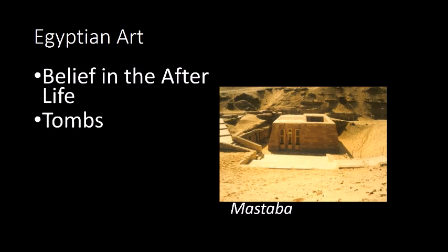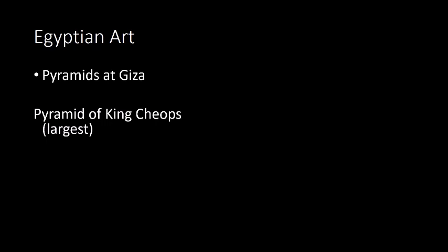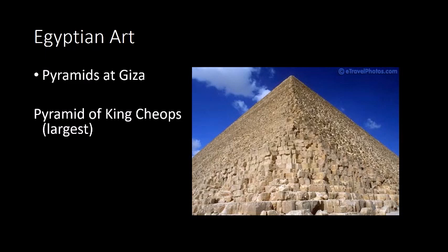The mastaba was very simple, just like a house — you have the post and lintel construction. However, there was one Pharaoh who wanted something grander than a mere mastaba, so he ordered his architect to design something grander. His architect had the idea of stacking one mastaba over the other, and the result was the pyramid. So we have the pyramids at Giza, the largest owned by King Cheops, or Pharaoh Cheops.